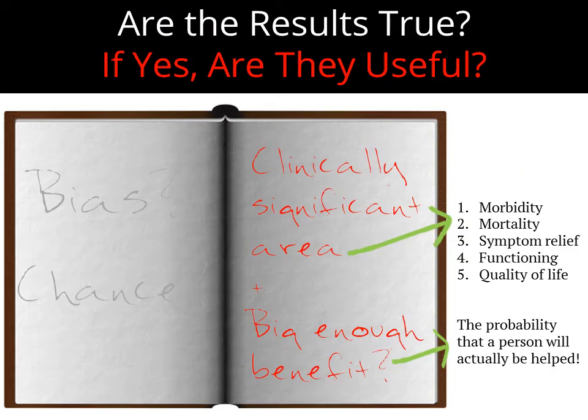The other thing you're looking for is whether the results are actually going to be useful — useful to a patient. We want outcomes that show benefit in the areas of morbidity, mortality, symptom relief, emotional, mental, or physical functioning, and health-related quality of life. Then you look at how big the results are — are they really likely to benefit people or not?